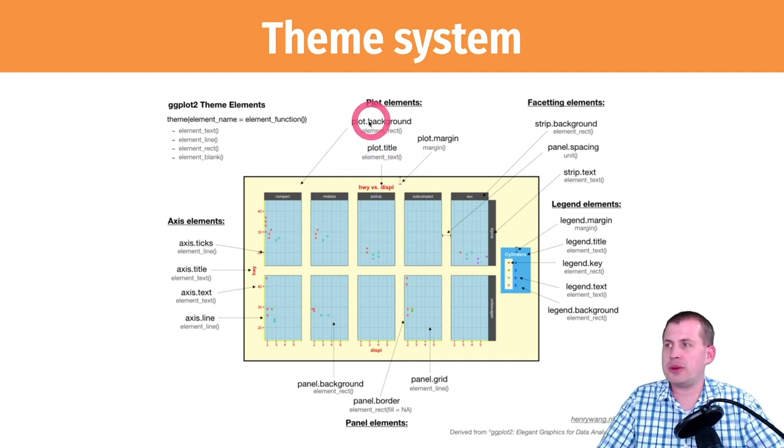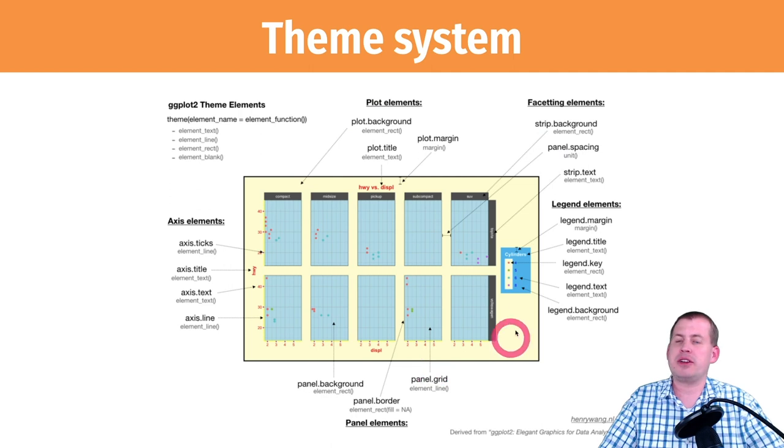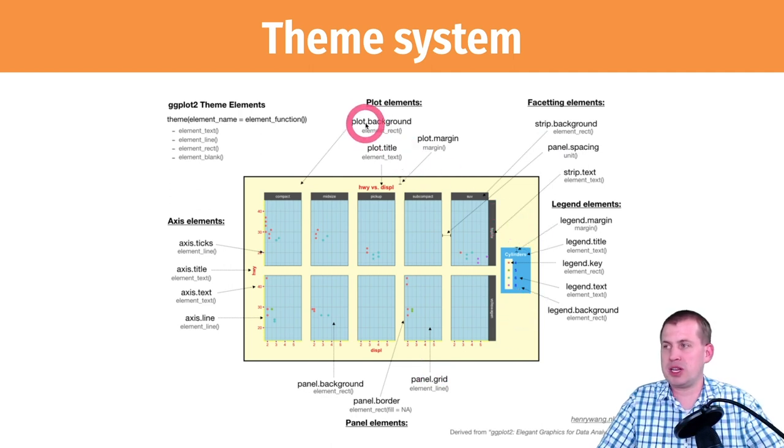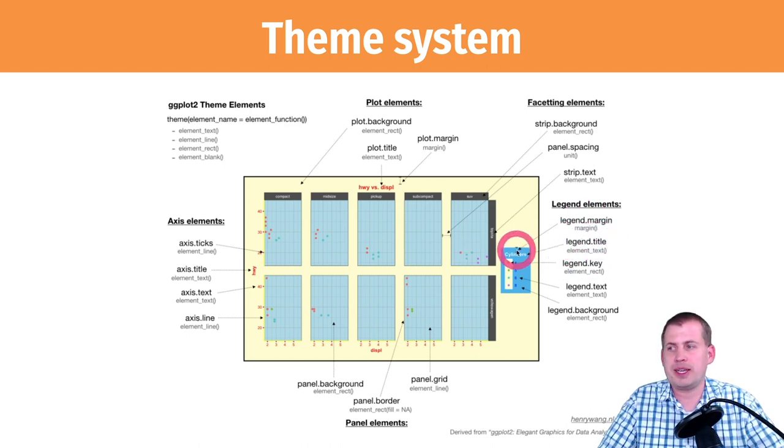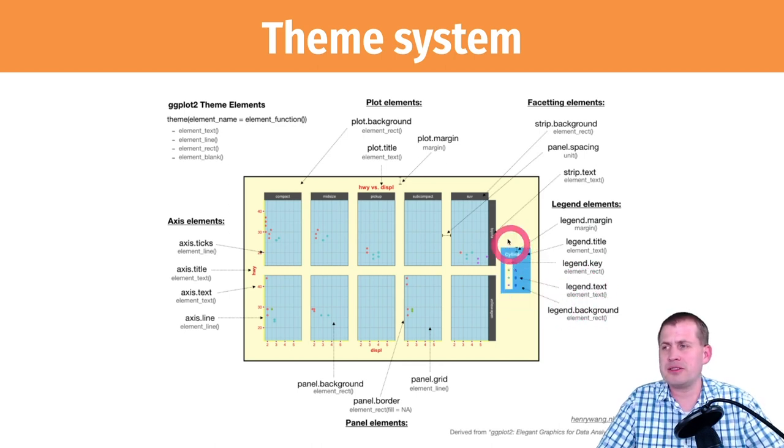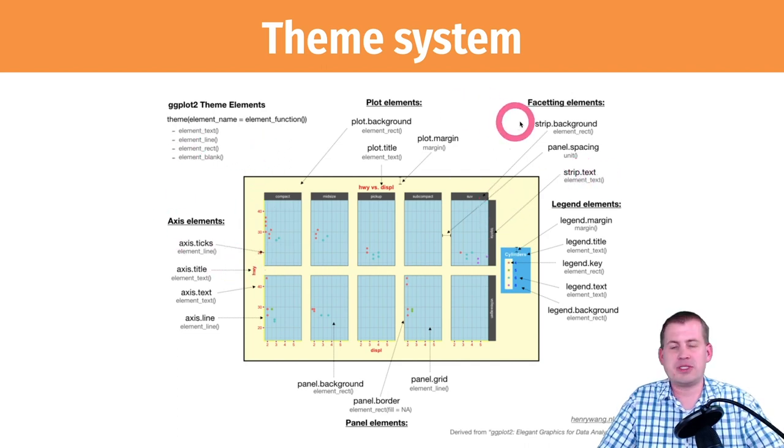The whole background of the plot, for example, you can use plot.background and access that and change its color and border. If you want to target stuff within the legend, you have all sorts of options like legend.title, legend.text. You can change the background, the spacing between panels, the panel strip text—there's all sorts of things you can do.